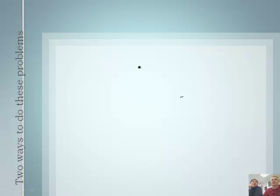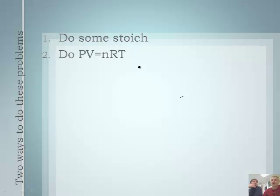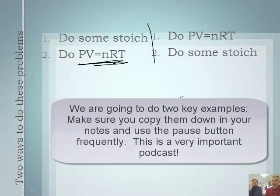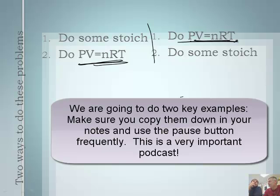There are two ways to solve these problems. You can do stoichiometry and then PV=nRT, or do PV=nRT and then stoichiometry. It sort of depends on the question - it depends on what you're starting with. PV equals nRT is your equation. You're going to use this over and over. We've done this before, and now we're going to mix it with stoichiometry.